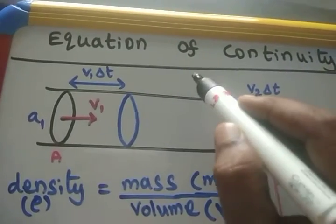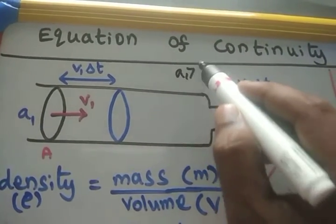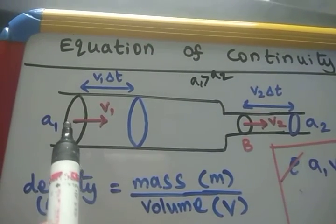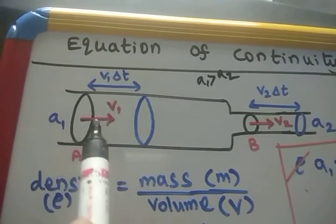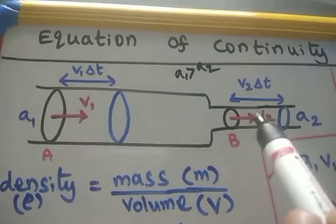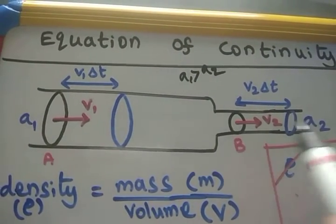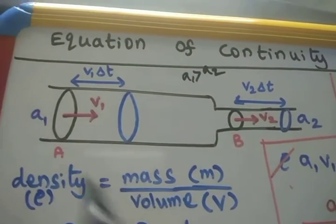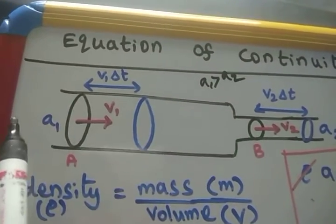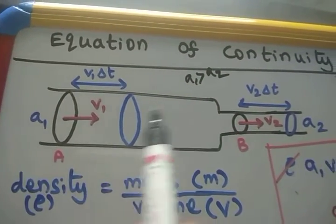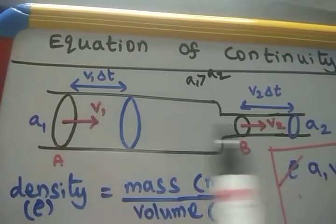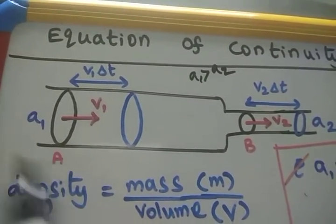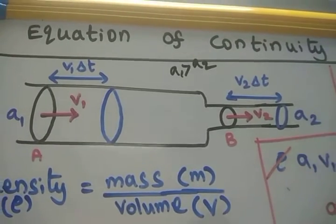A1 is greater than A2. The liquid which flows at point A has velocity V1, and the liquid crossing point B has velocity V2. So the same liquid flows from point A to B — here the velocity is V1, here the velocity is V2. The area of cross section is A1 here and A2 there.